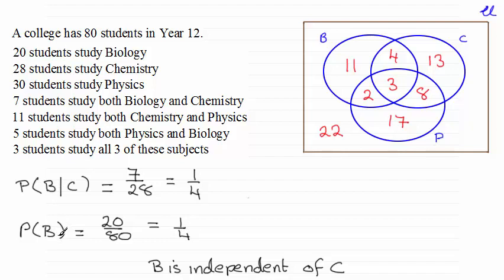So the probability of someone doing biology is independent of whether they did chemistry — B is independent of C. I'll leave it up to you, but you could do a similar argument if you did the probability of C given B and compared it to the probability of C. You should find you get exactly the same probabilities.